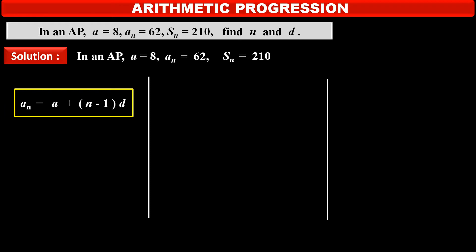So, substituting the given values in this formula, we get value of Nth term that is 62 is equal to first term A that is 8 plus in bracket N minus 1 into common difference D as it is.